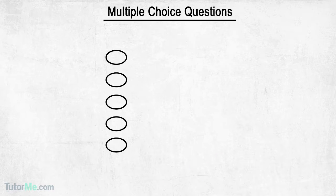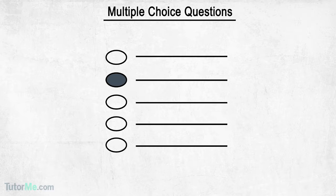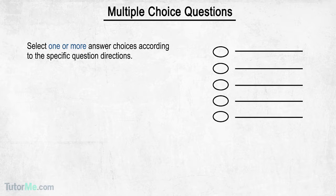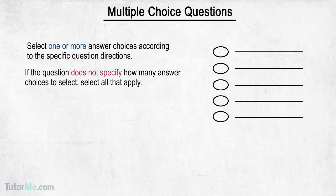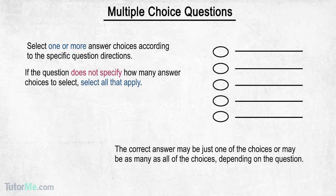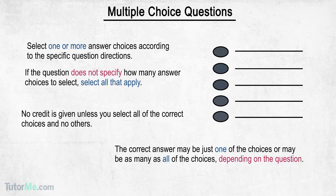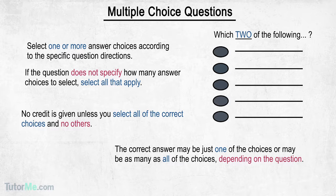In addition to the classic multiple choice question with only one correct answer, some multiple choice questions will ask you to select one or more answers. Here are the official directions: Select one or more answer choices according to the specific question directions. If the question does not specify how many answer choices, select all that apply. The correct answer may be just one or all of the choices. No credit is given unless you select all the correct choices and no others. If the question specifies how many answer choices to select, select exactly that number of choices.